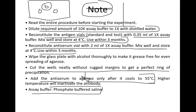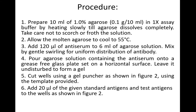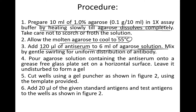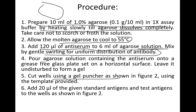The procedure: prepare 10 mL of 1% agarose in 1x buffer by heating slowly until the agarose dissolves completely, taking care not to scorch or drop the solution. Allow the molten agarose to cool to 55°C. Then add 120 microliters of antiserum to 6 mL of agarose solution and mix by gentle swirling for uniform distribution of antibody.